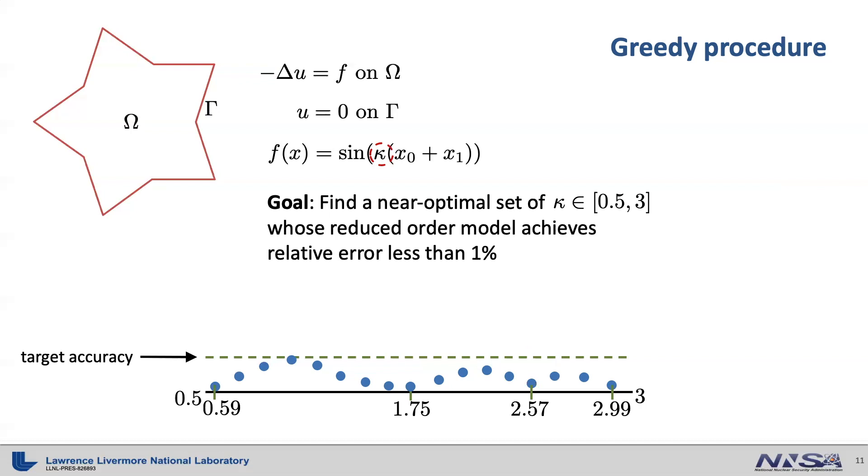Now we have a problem here. The relative error is defined as the norm of the difference between full order model and reduced order model solutions divided by the norm of the full order model solution. This implies that the full order model solution needs to be computed. This will make the whole greedy procedure impractical.